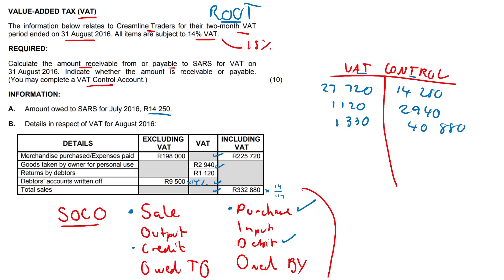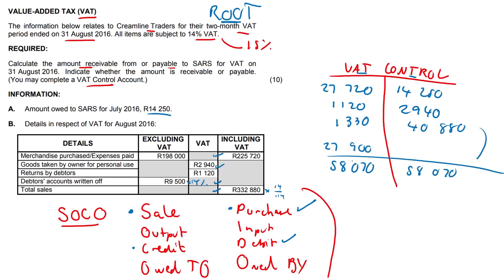Now we can total our sides. We get 58,070 on the credit side — that is clearly the bigger side. The debit side gives us 27,900. Because the balance sits on the debit side, it is the amount owed to SARS, which means it is payable. Therefore, 27,900 is payable. Don't forget to indicate that the amount is payable after you've drawn up your VAT control account.